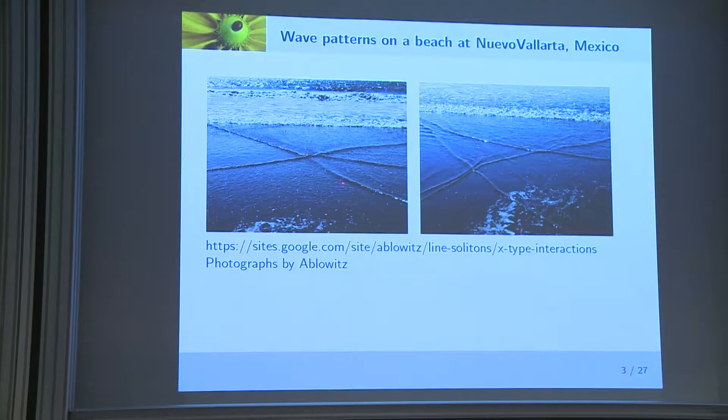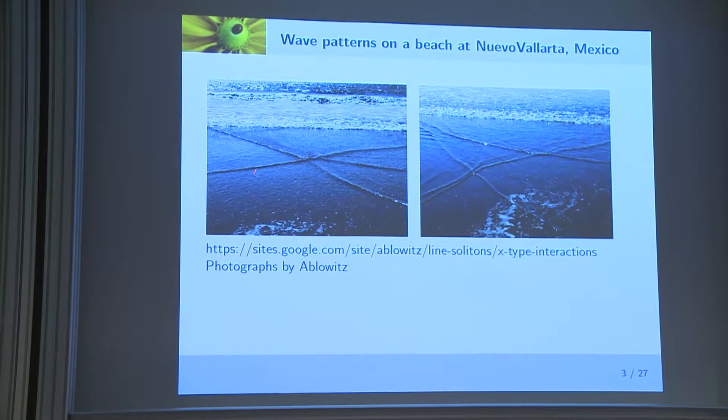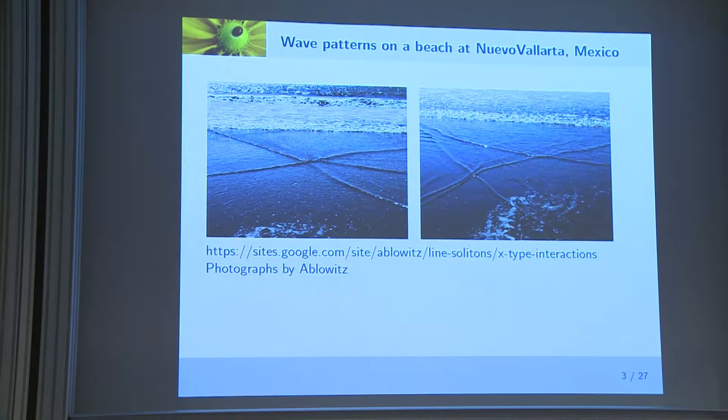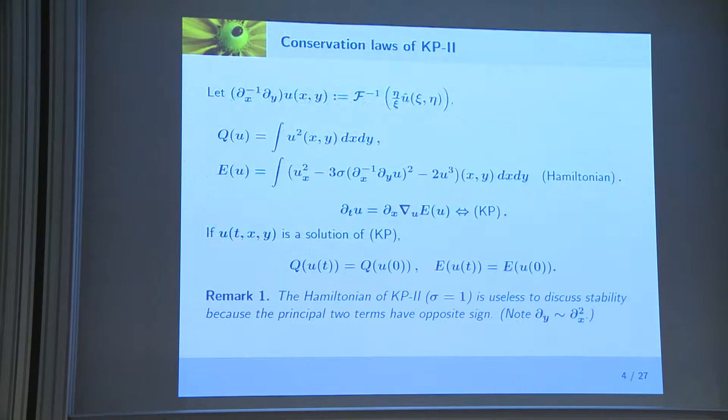This is a photograph from the website of Professor Ablowitz, showing a picture of the ocean with many waves that are uniform in the transversal direction of motion and they are interacting. KP equations are also used to describe the intersection of line soliton waves. But today I'm only talking about the stability of one line soliton, so there does not appear any intersection of solitons in my talk.